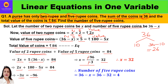So x equals minus 96 divided by minus 3. The two negatives cancel, and 96 divided by 3 gives 32. So x equals 32, and x was the number of 2-rupee coins. But we need to find the number of 5-rupee coins, which is 36 minus x, that is 36 minus 32, which equals 4. So there are only 4 coins of 5 rupees.